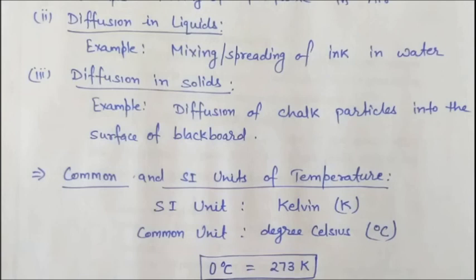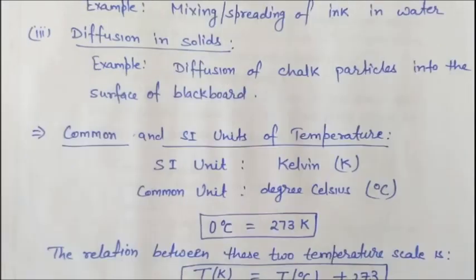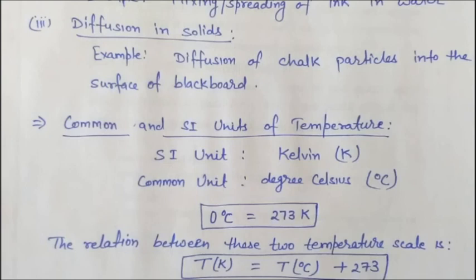The melting point of ice on the kelvin scale is 273 K, while on the Celsius scale it is 0°C. The relation between kelvin scale and Celsius scale can be written as an equation: temperature in kelvin, T(K), is equal to temperature in degree Celsius, t(°C), plus 273. Here T is in kelvin and t is in degree Celsius.